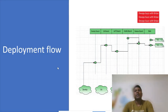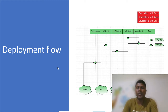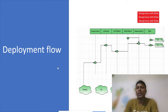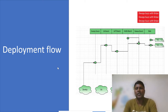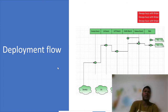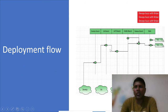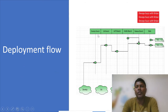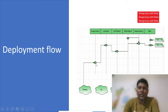So let's see the deployment flow. In the current process, projects have a QA sandbox, a UAT sandbox, and a production sandbox. Each developer or group of developers also has their own sandbox, called the developer sandbox. For the branching strategy, the first type of branch is a feature branch.